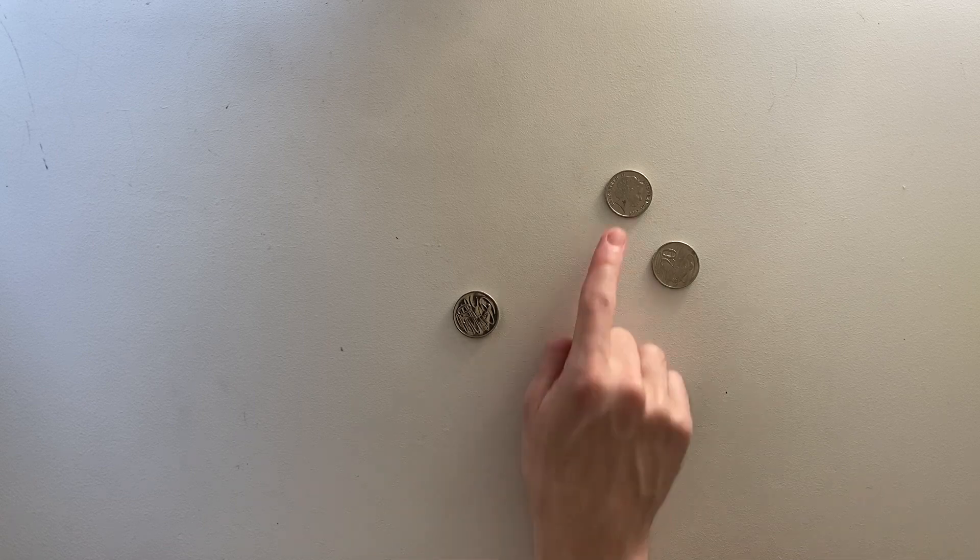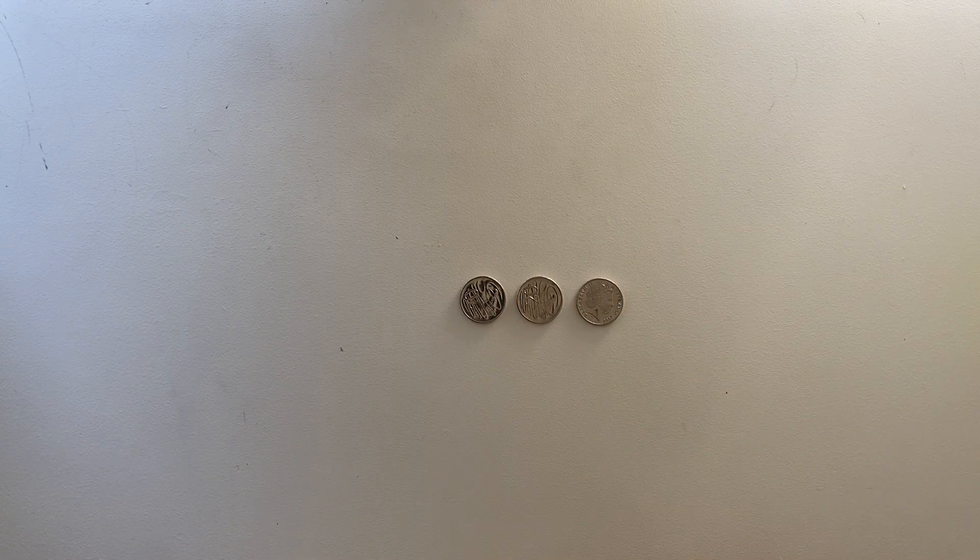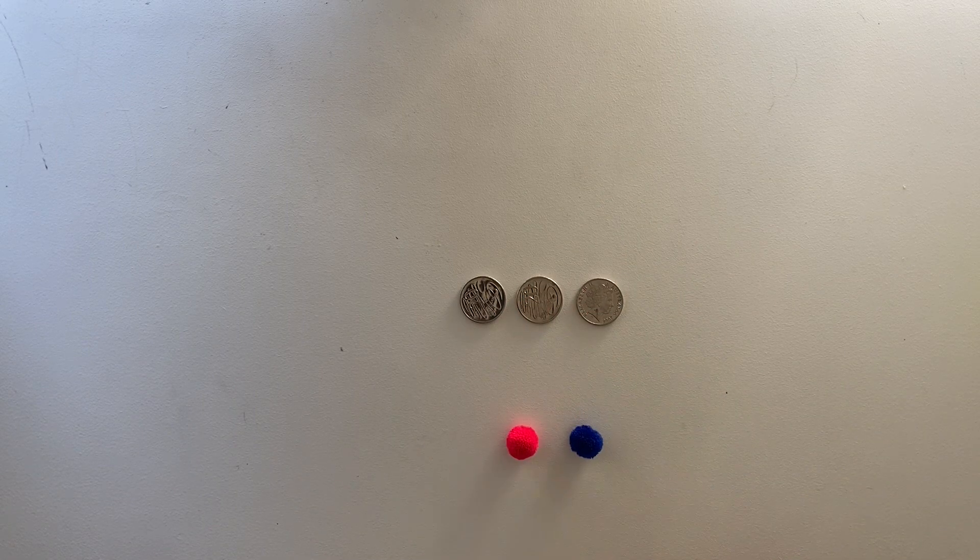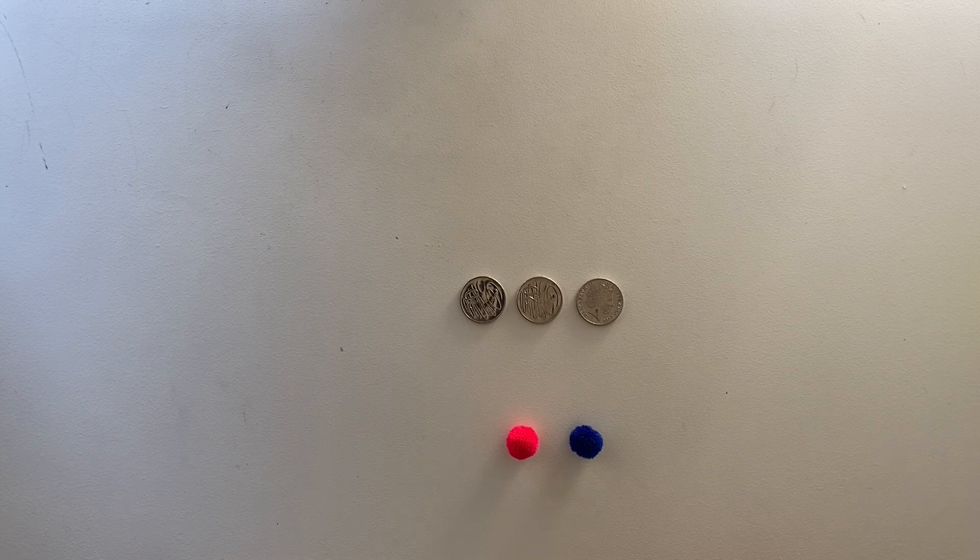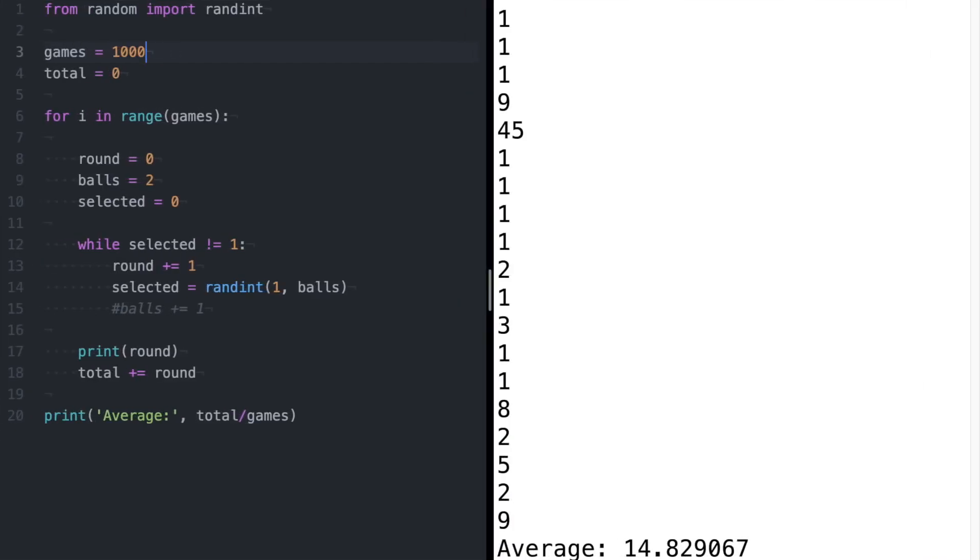Before we run this program, can we predict what the average will be? Well, there's two balls in the bag, so we might naively guess that it takes two draws on average to get the blue ball. As it turns out, this naive guess is correct. After running the game a hundred times, the average is 2.08. After 10,000, it's 2.01. And after a million, it's 1.999. The average is getting closer and closer to two.